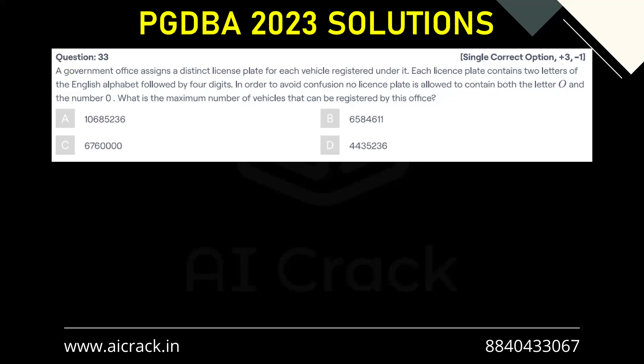Let's solve question number 33. A government office assigns a distinct license plate for each vehicle registered under it. Each license plate contains two letters of the English alphabet followed by four digits. In order to avoid confusion, no license plate is allowed to contain both the letter O and the number zero. What is the maximum number of vehicles that can be registered under this office?